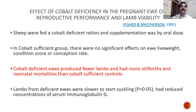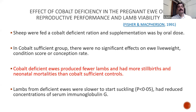Research by Fisher and Macpherson on the effect of cobalt deficiency in pregnant ewes showed that cobalt-deficient ewes produced fewer lambs and had more stillbirths and neonatal mortality compared to cobalt-sufficient ewes. Lambs from deficient ewes were slower to start suckling and had reduced serum immunoglobulin G concentration, indicating impaired passive immunity transfer. This demonstrates the important role of cobalt in reproduction and lamb viability.